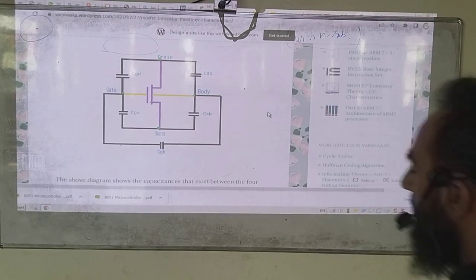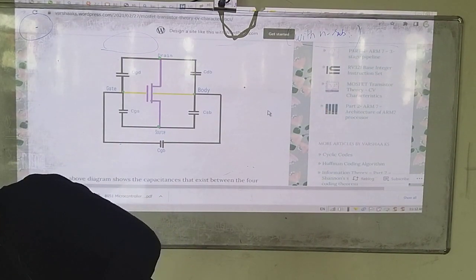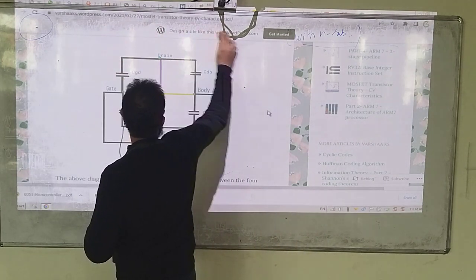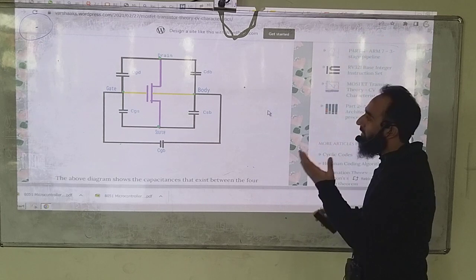So the heading is CV characteristics, but before we go for CV characteristics we need to understand that the overall capacitance of a MOSFET is a sum total of various capacitors in between different regions.